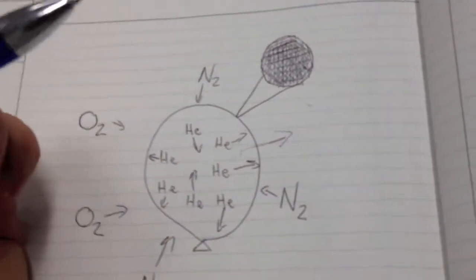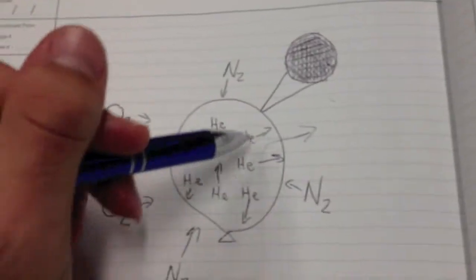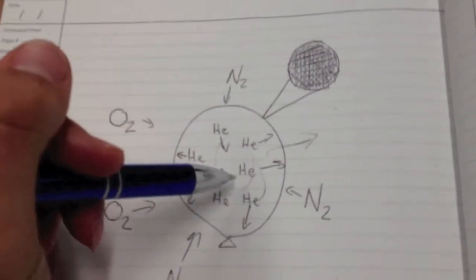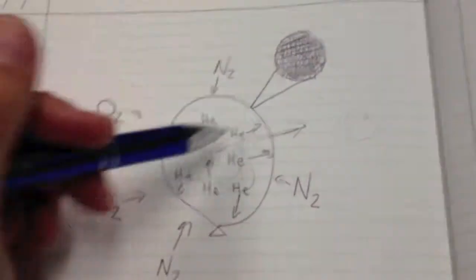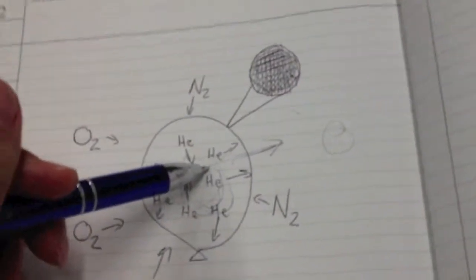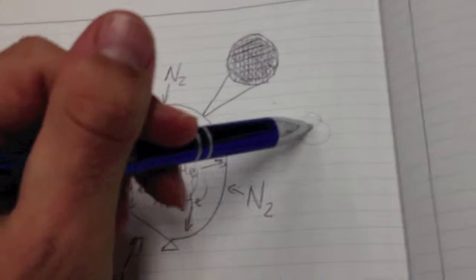Now this is known as osmosis. So osmosis says the higher concentrated area is going to diffuse to a lower concentrated area. So there's a higher concentration of helium here. It's going to diffuse through the membrane, which is the balloon, to a lower concentrated area.